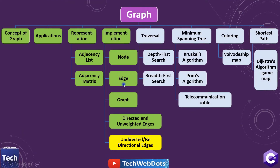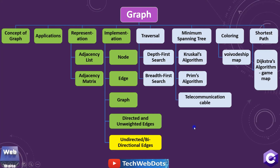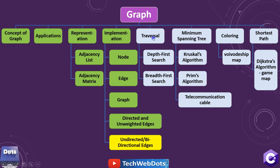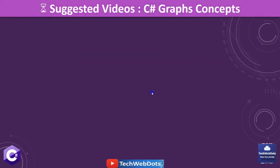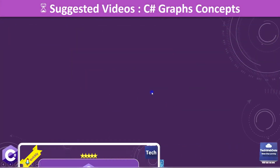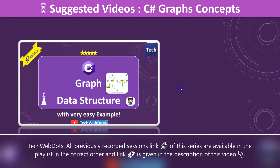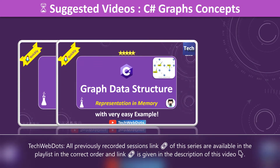All the green sections I've already covered, including the highlighted one on undirected bi-directional edges. I also want to discuss the generic implementation. In our upcoming sessions we will cover depth-first search and breadth-first search, so don't forget to subscribe. I strongly suggest you watch the previous videos where I explained the graph data structure.